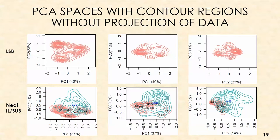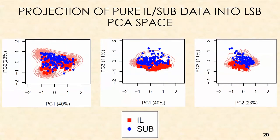I used the first three principal components shown in three different orthogonal views, covering a certain variance in the data and projecting my burn data within them. This allows the total ion spectra data to be compared, showing overlap where ions are similar and consistent — and ticks to show where differences lie. I performed this on both the large-scale burn and neat IL/substrate PCA spaces to identify similarities and differences.